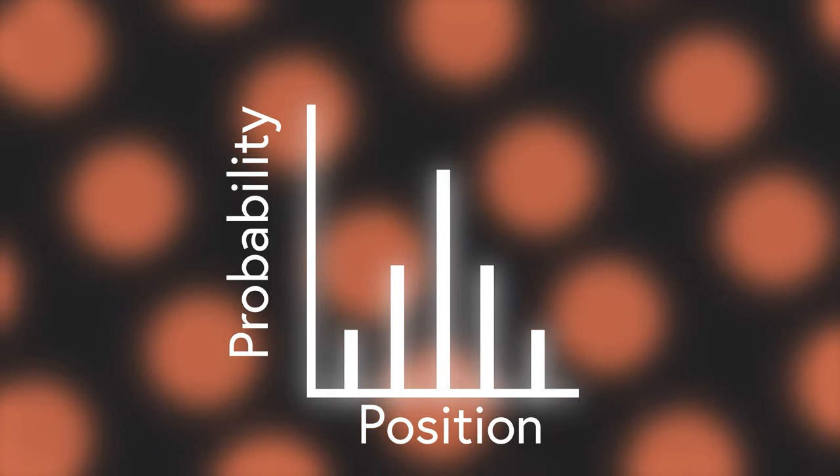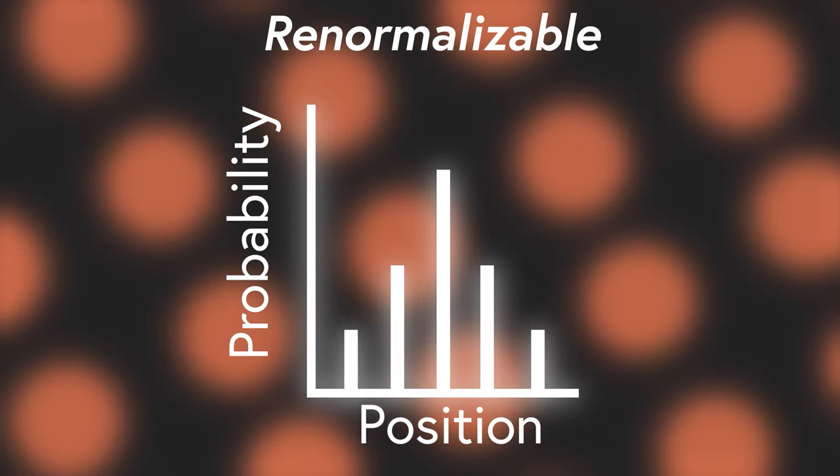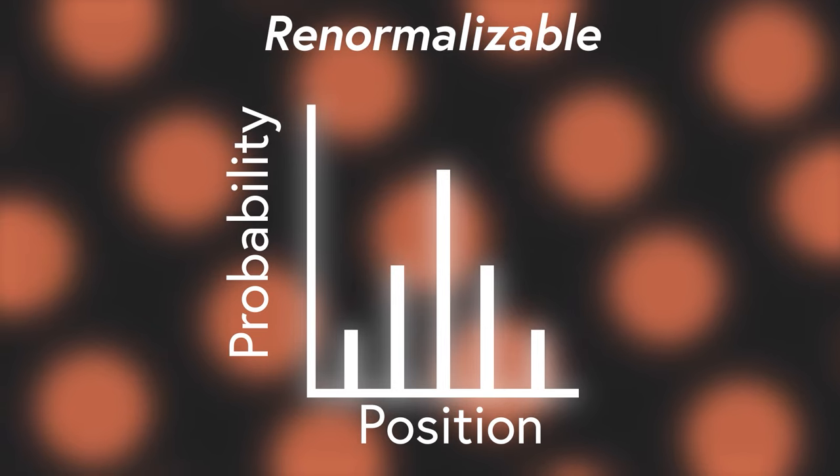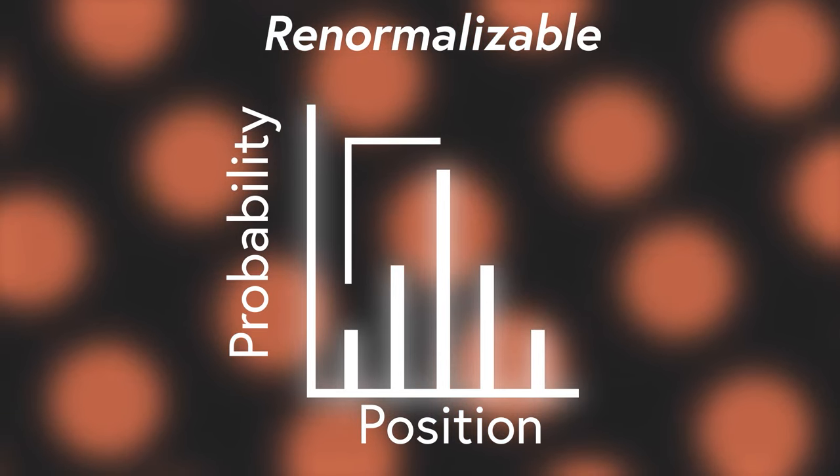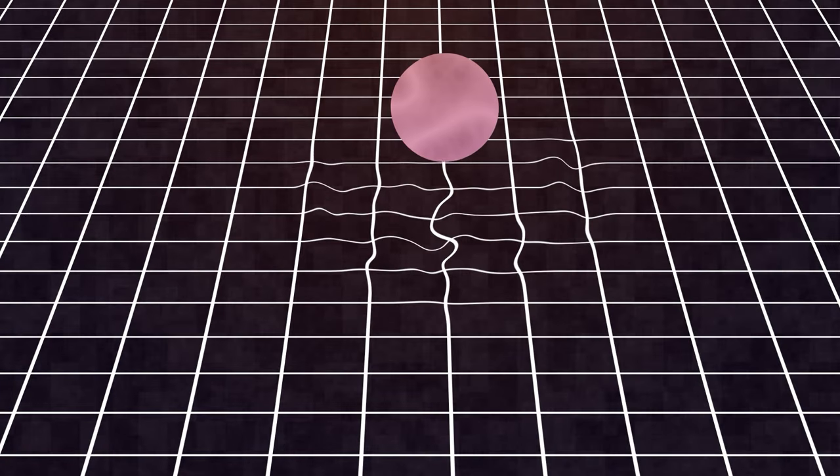Well, in order for the probability distribution to be valid, one of the conditions it must meet is that it has to be renormalizable. Meaning, you can augment the distribution to where, if you sum up all the probabilities on the distribution, it adds up to 100%.